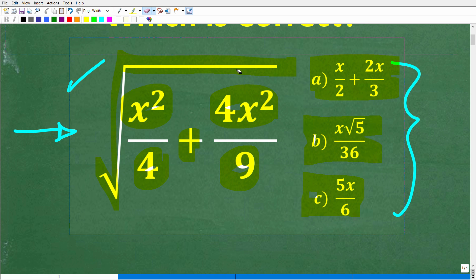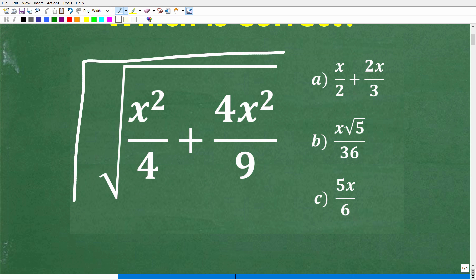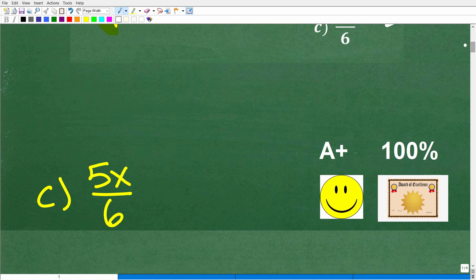So let's go ahead and take a look at this question again. Let me erase all of this stuff. One of these is the right answer. We're trying to simplify this down. The square root of x squared over 4 plus 4x squared over 9. Let's take a look at that answer right now. That is C, 5x over 6.